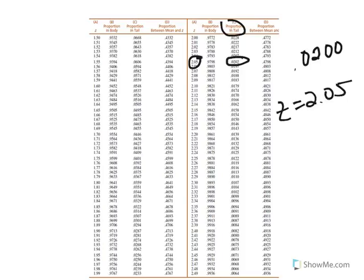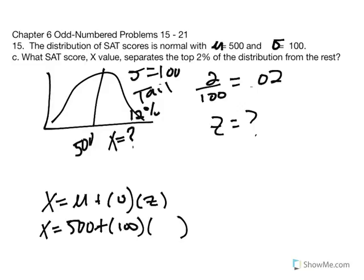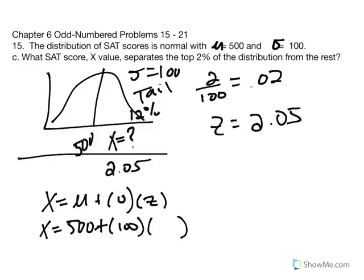Using Z equal to 2.05, we find the X value that is 2.05 standard deviation units above the mean: X equals 500 plus 100 times 2.05, giving an X value of 705. If you score above 705 on the SAT, that places you in the top 2% of the distribution — only 2% of test takers score 705 or higher.